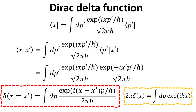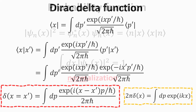Starting again with the Fourier transformation relating the x and p basis, we multiply both sides of the equation with the x'-prime ket. Then we replace the p' and x' brackets with the x-p transformation identity from the previous slide. Since the inner product of the x-ket with the x'-prime ket is the Dirac-Delta function, we then arrive at an explicit expression of the Dirac-Delta function. This is one of the many definitions of the Dirac-Delta function.